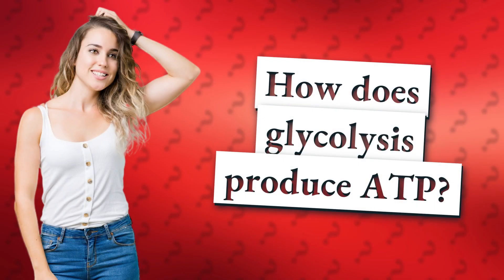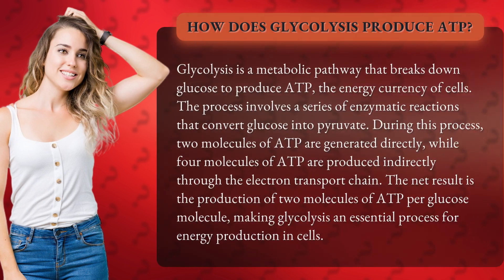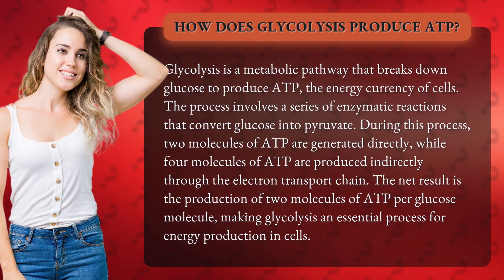How does glycolysis produce ATP? Glycolysis is a metabolic pathway that breaks down glucose to produce ATP, the energy currency of cells.